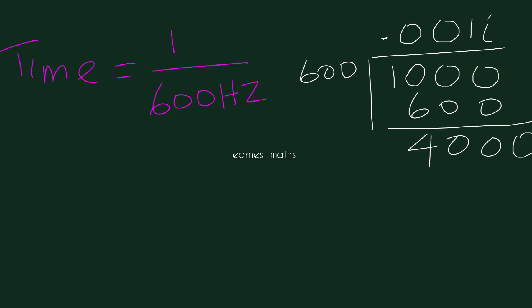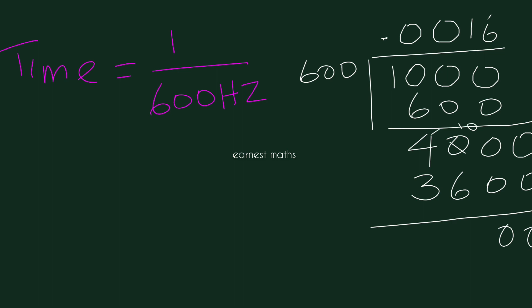600 goes into 4000 six times, giving 3600, with a remainder of 400. Continuing the division, we get the answer equal to 0.0016 seconds.